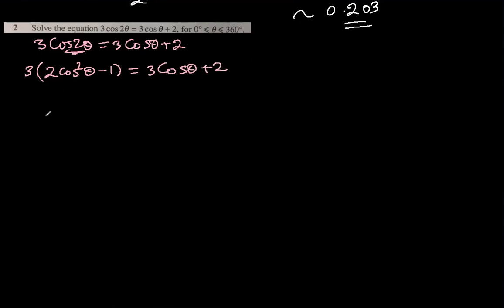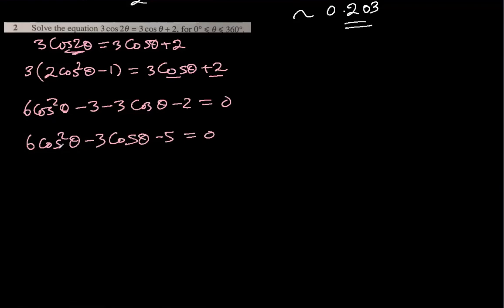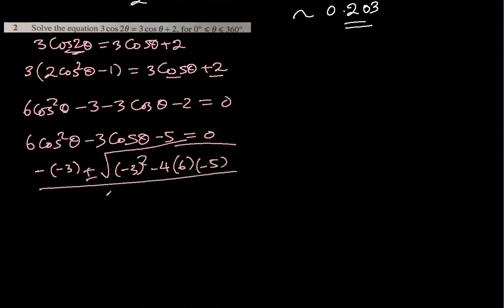Let's open this and make a quadratic equation. So 6 cos²θ minus 3 cos θ minus 3 cos θ minus 2 equal to 0. So 6 cos²θ minus 3 cos θ minus 5 equal to 0. Now we have this quadratic equation. We can use quadratic formula for this.